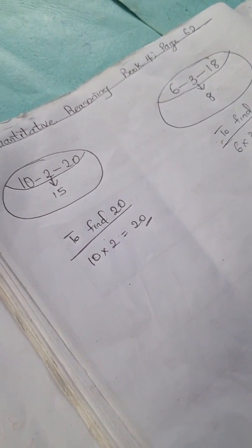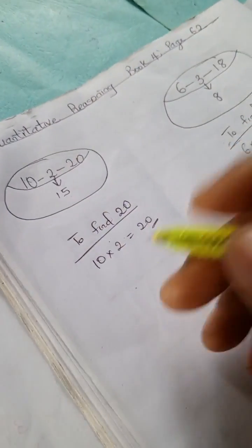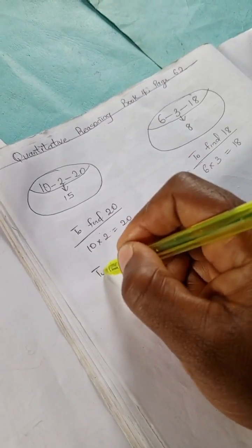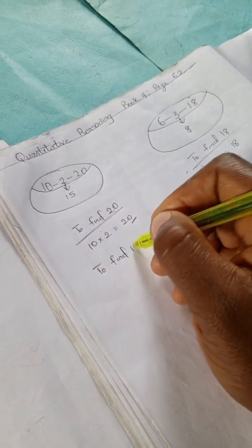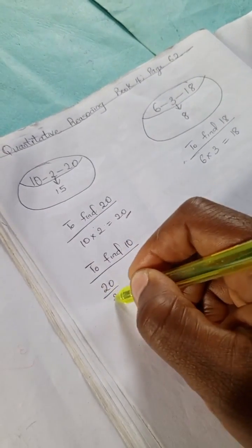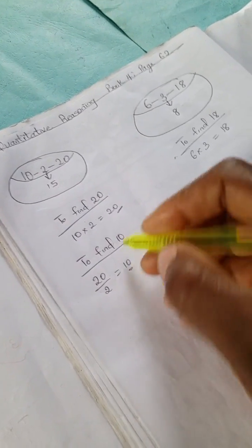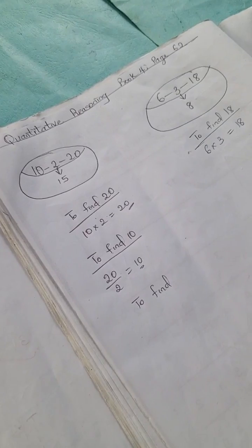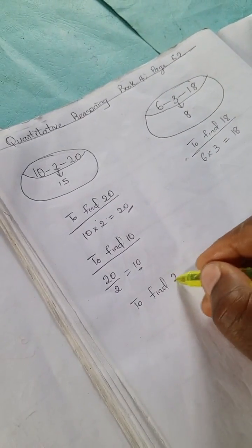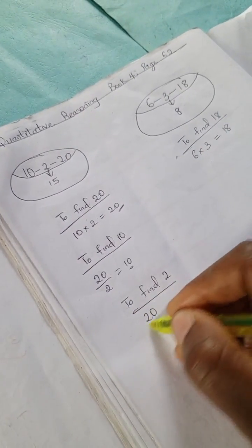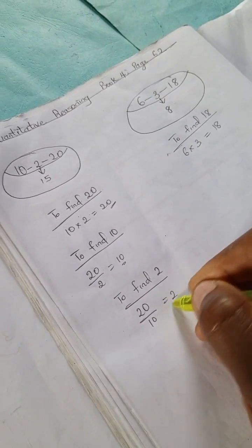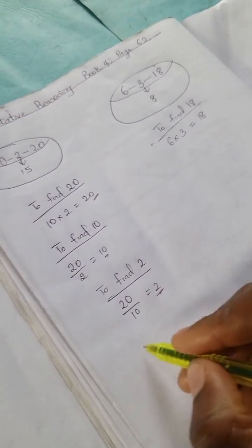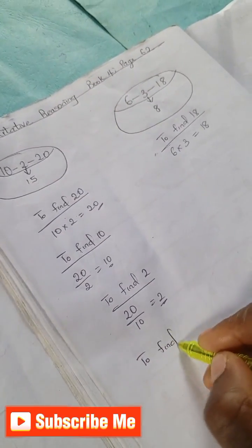Let's go to find 10. We have 20 divided by 2 is 10. And to find 2, we have 20 divided by 10 is 2.